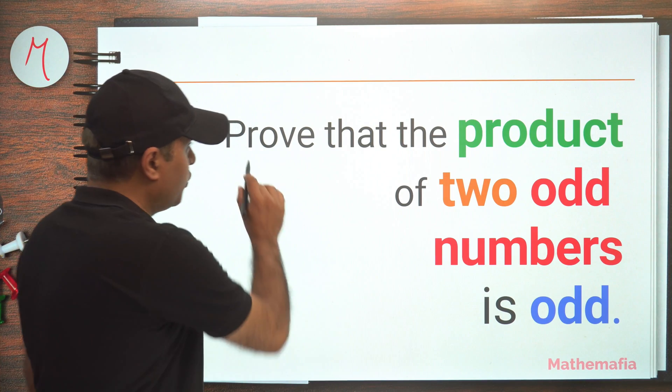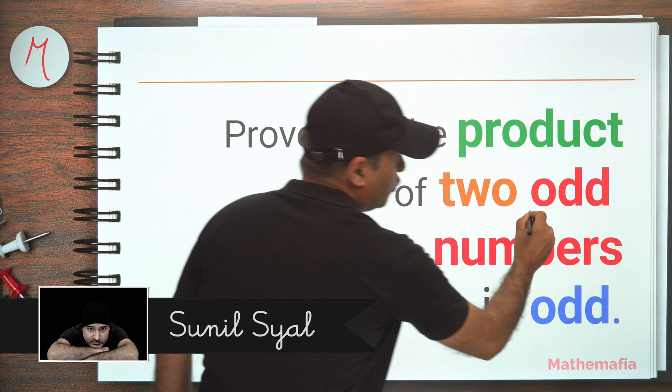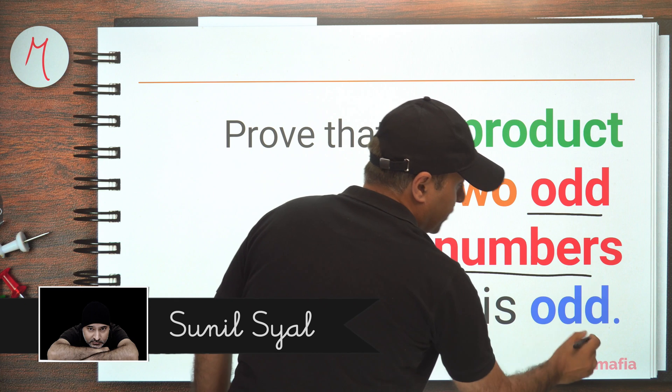In this tutorial, we are going to prove that the product of two odd numbers is always odd.